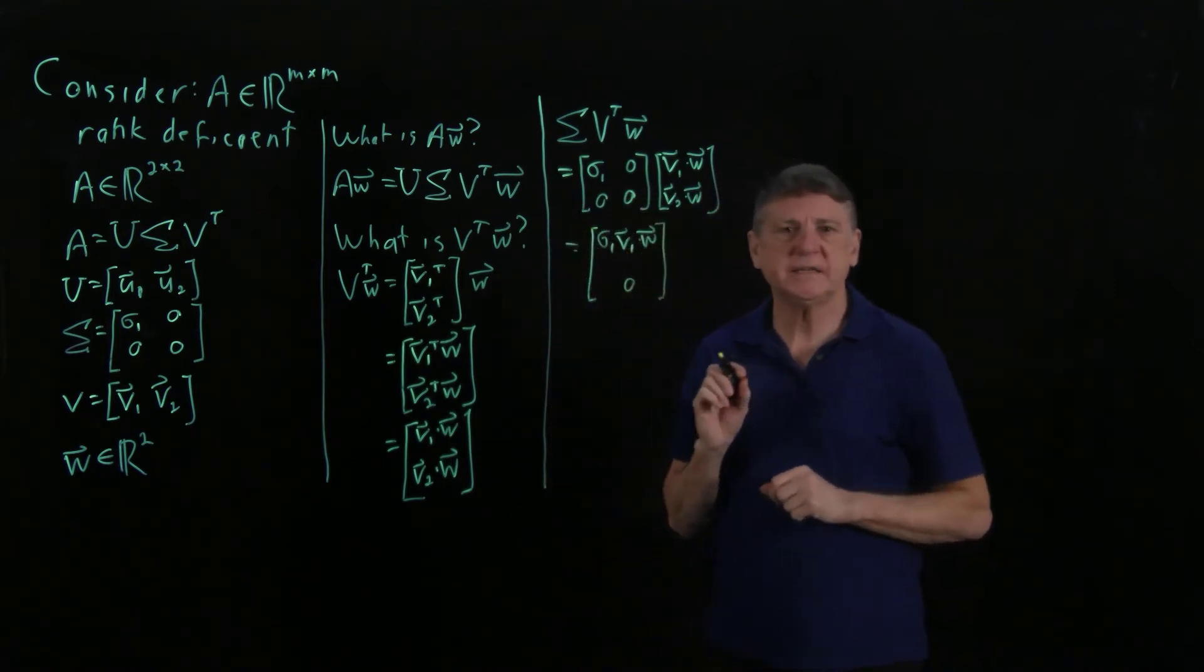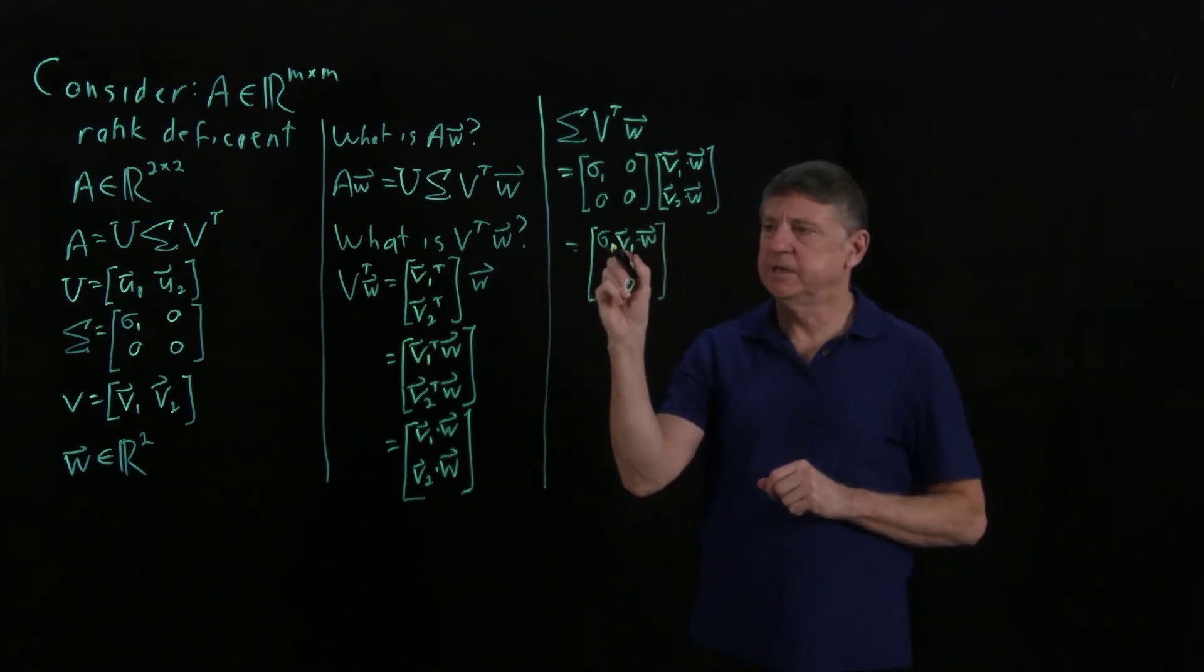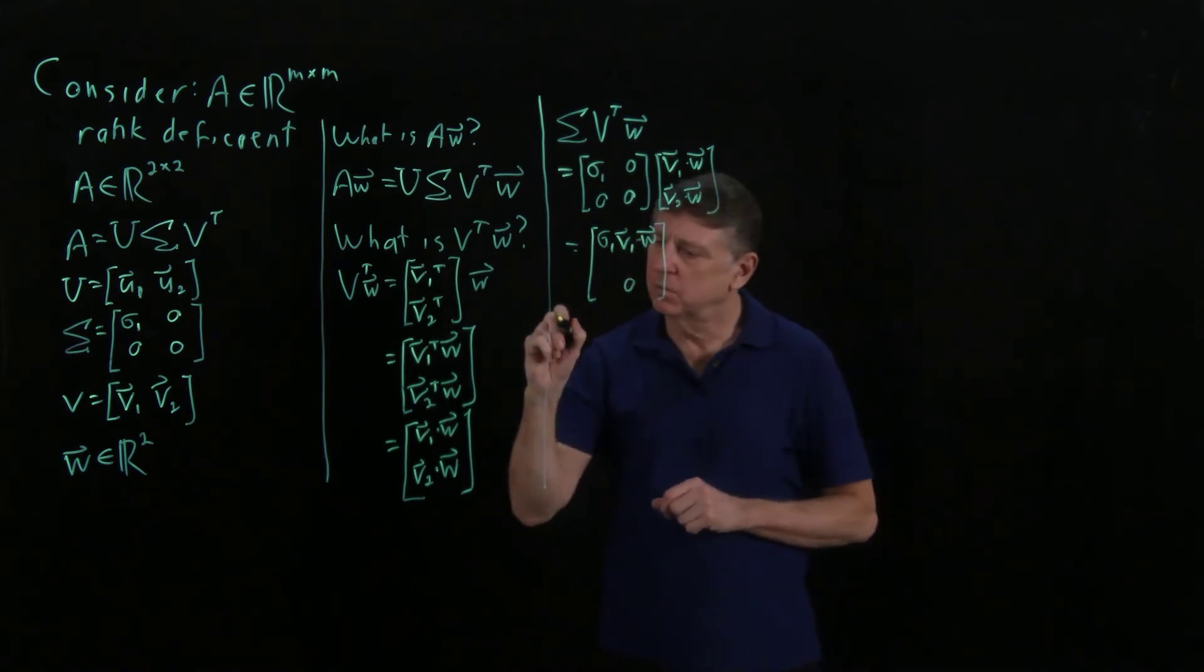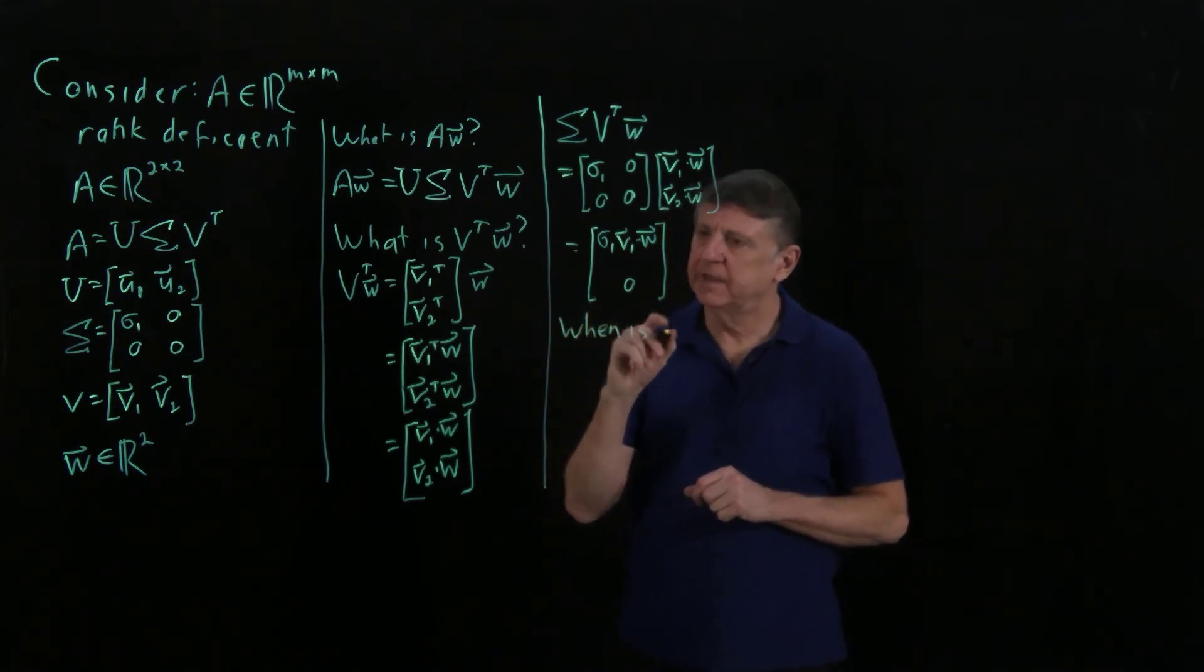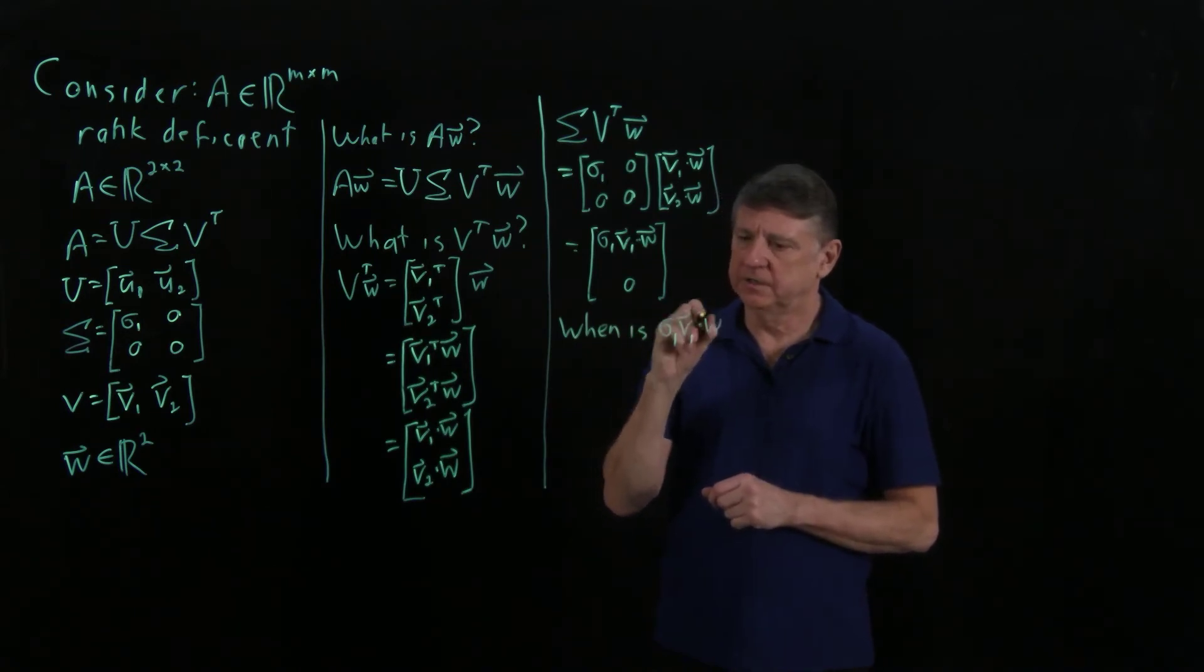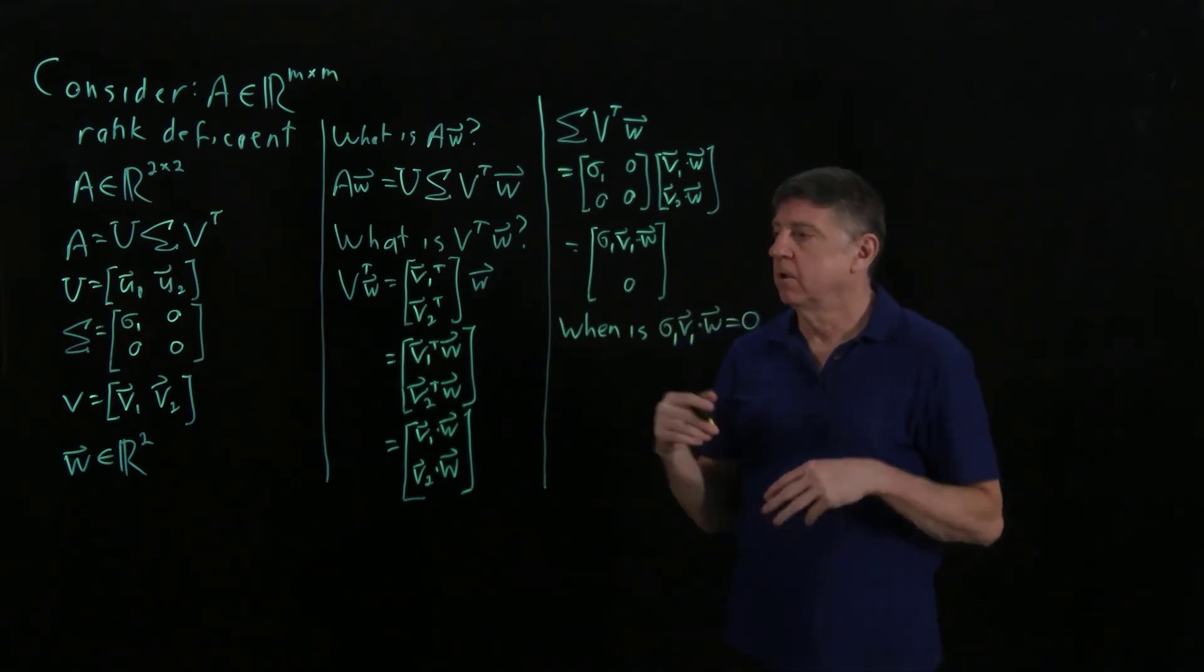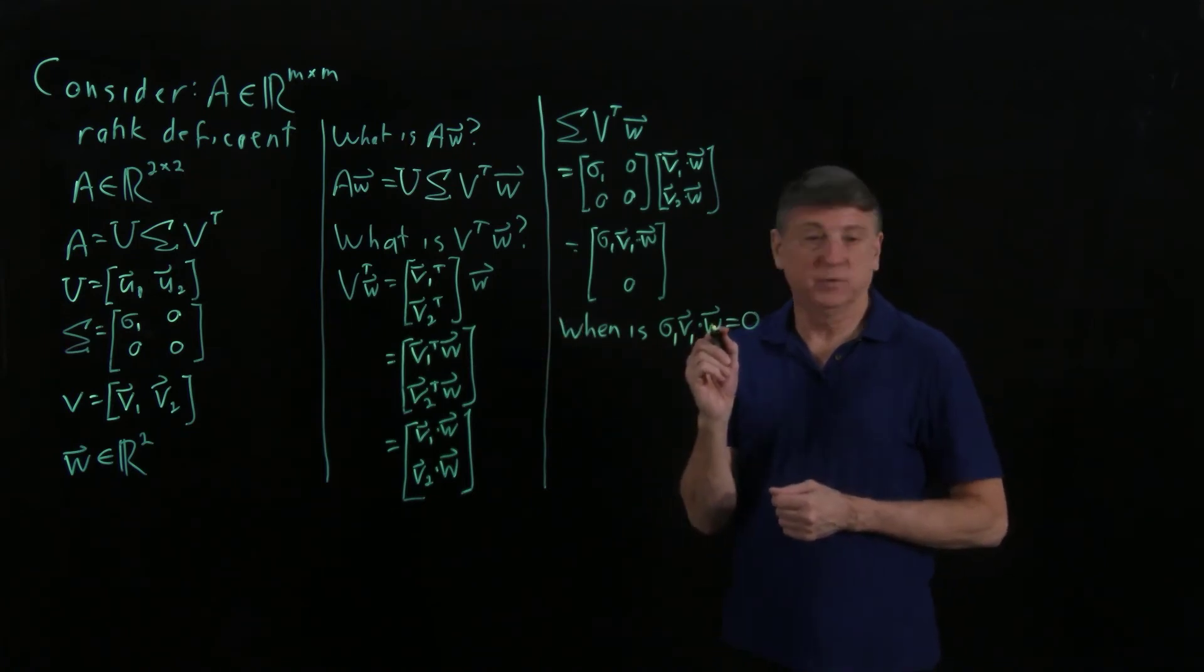So let us ask ourselves, under what condition is the first entry 0? So when is sigma 1 times V1 dot W equal to the scalar value 0? One simple answer is, well, when W is 0. Let's suppose that W is non-zero.